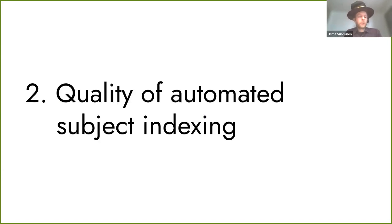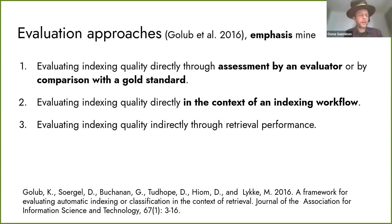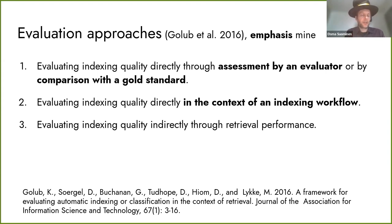Moving on to quality of automated subject indexing. There are several approaches for evaluating automated indexing. First, you can evaluate quality directly by having evaluators assess the output, or by comparing it to a gold standard — a set of documents that have been manually indexed and assumed to be high quality. Second, you can look at quality in the context of an indexing workflow, for example, how often machine-generated suggestions are accepted by users. Third, you can look at quality indirectly by measuring information retrieval performance on automatically indexed documents, though this is the most difficult setting to arrange.